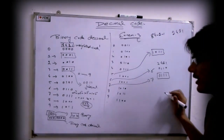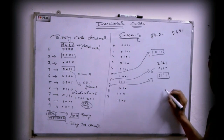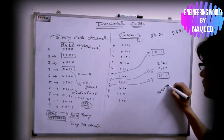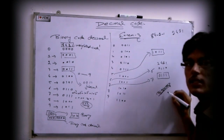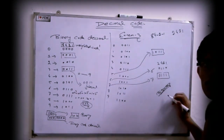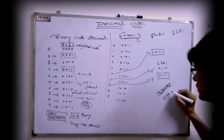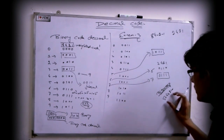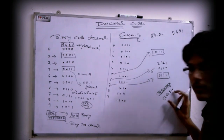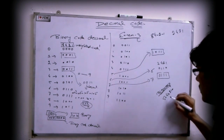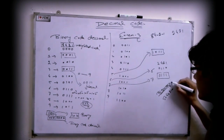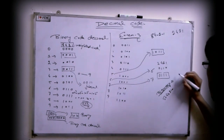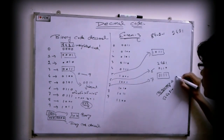We also have another type of code called the 5-bit binary code. In this code the positions are weighted 5, 0, 5, 0, 4, 3, 2, 1, 0. Numbers are represented according to this decimal code, and one important rule is that in this binary representation we must always have exactly 2 ones.